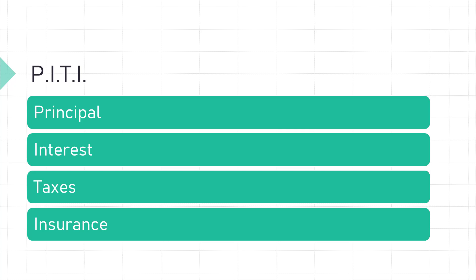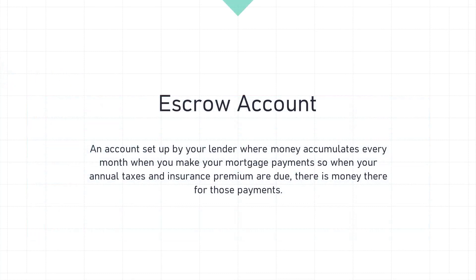The same applies to your homeowner's insurance — the second I of P-I-T-I. One-twelfth of your estimated annual insurance goes into your escrow account in order to pay your annual insurance premium when it becomes due. The escrow account is set up by your lender where money accumulates each month so that when your annual taxes and insurance premium are due, the funds are available.